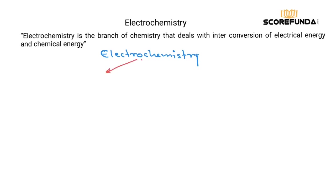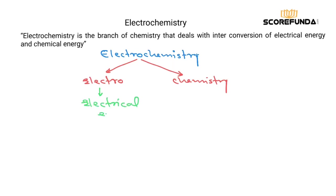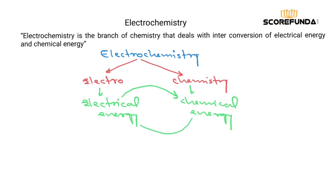In the word 'electrochemistry' there are two terms: 'electro' and 'chemistry'. Electro means electrical energy. This branch of chemistry which deals with the inter-conversion of electrical energy into chemical energy, or chemical energy into electrical energy, is called electrochemistry.